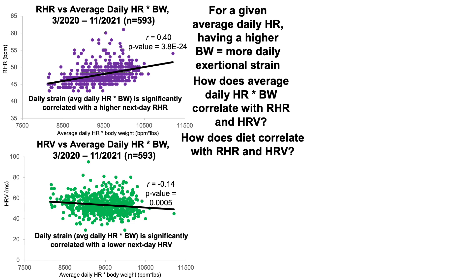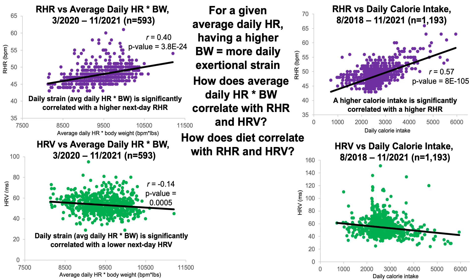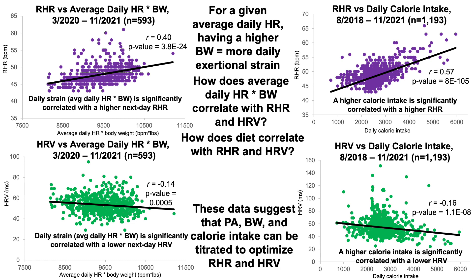Shifting to diet — how does diet correlate with resting heart rate and heart rate variability? The first metric is calorie intake. I've been weighing all my food since 2015 and logging it, so I have almost 1,200 days of dietary data. The higher my calorie intake, that's significantly correlated with a higher resting heart rate, and a higher calorie intake is also significantly correlated with a lower heart rate variability. This suggests that physical activity, body weight, and calorie intake can be specifically titrated to optimize both resting heart rate and heart rate variability.